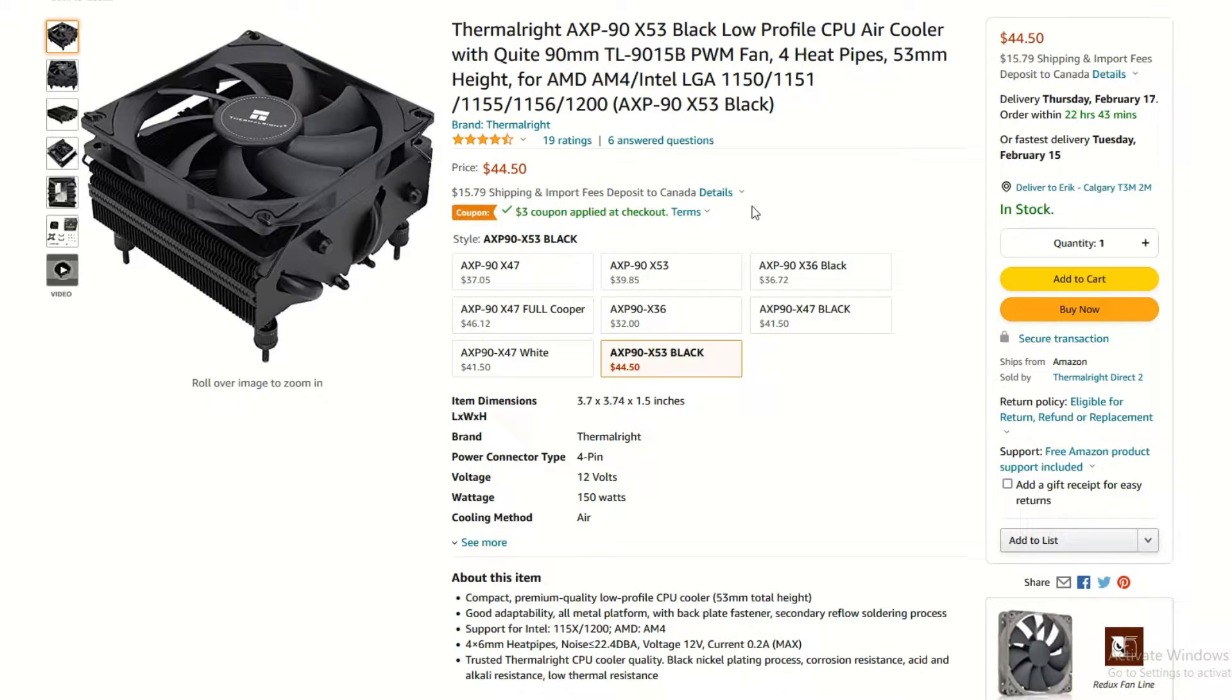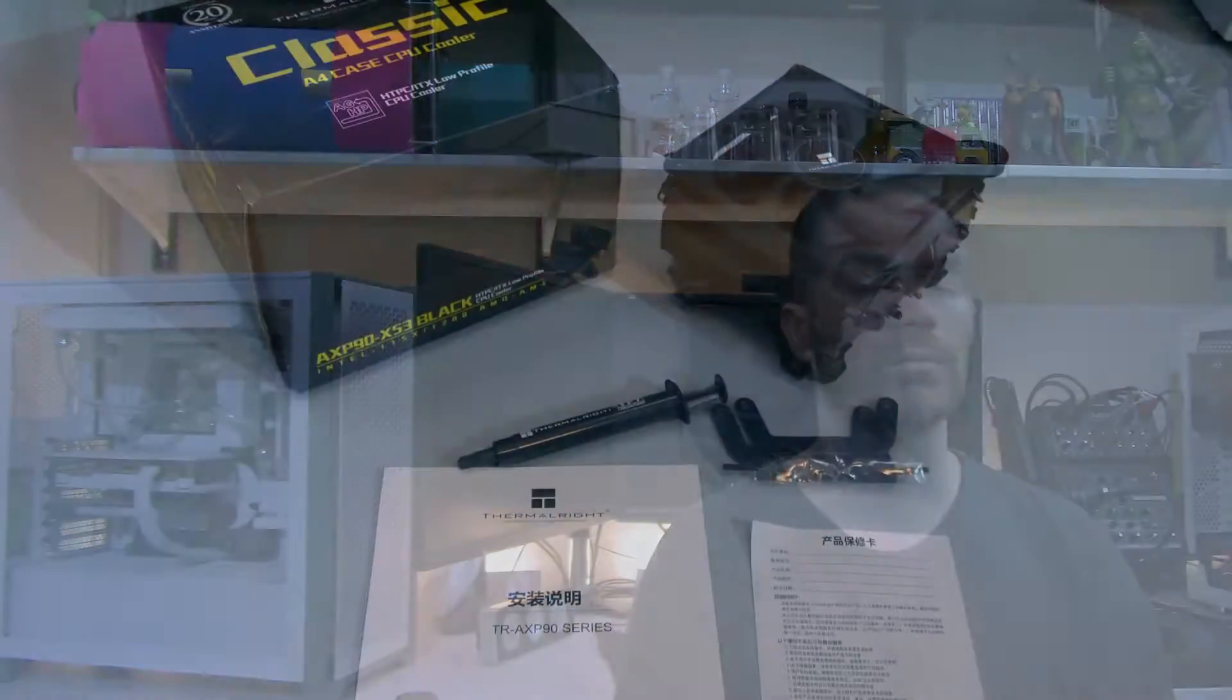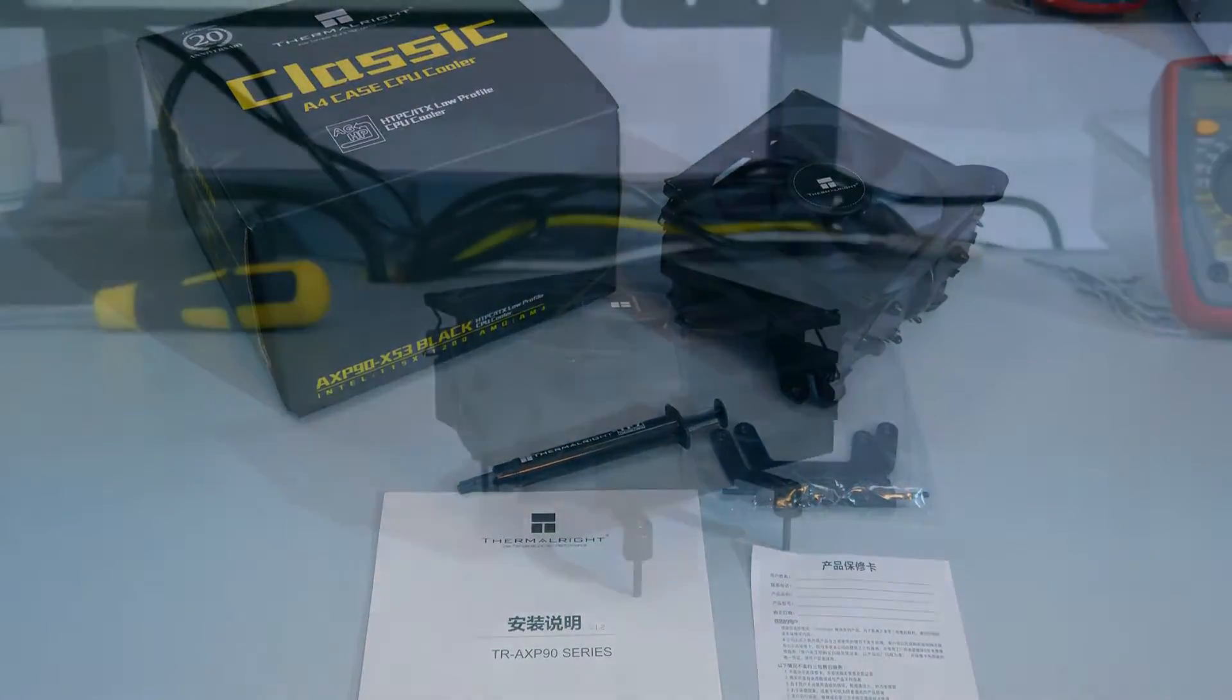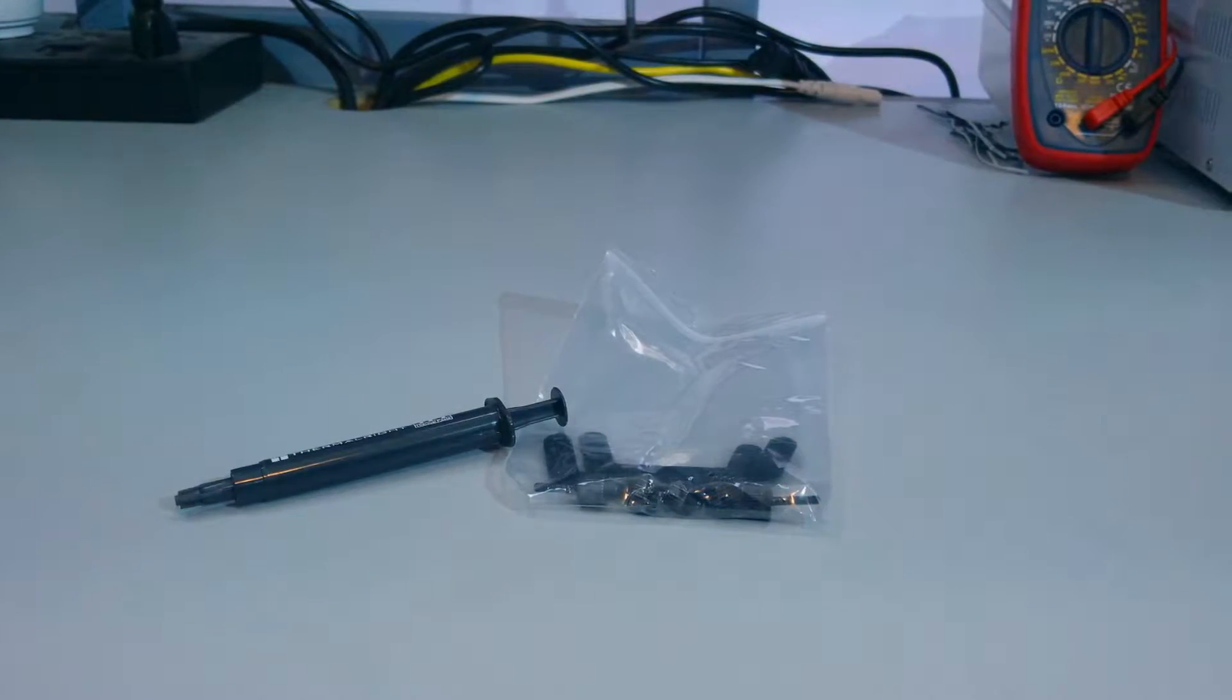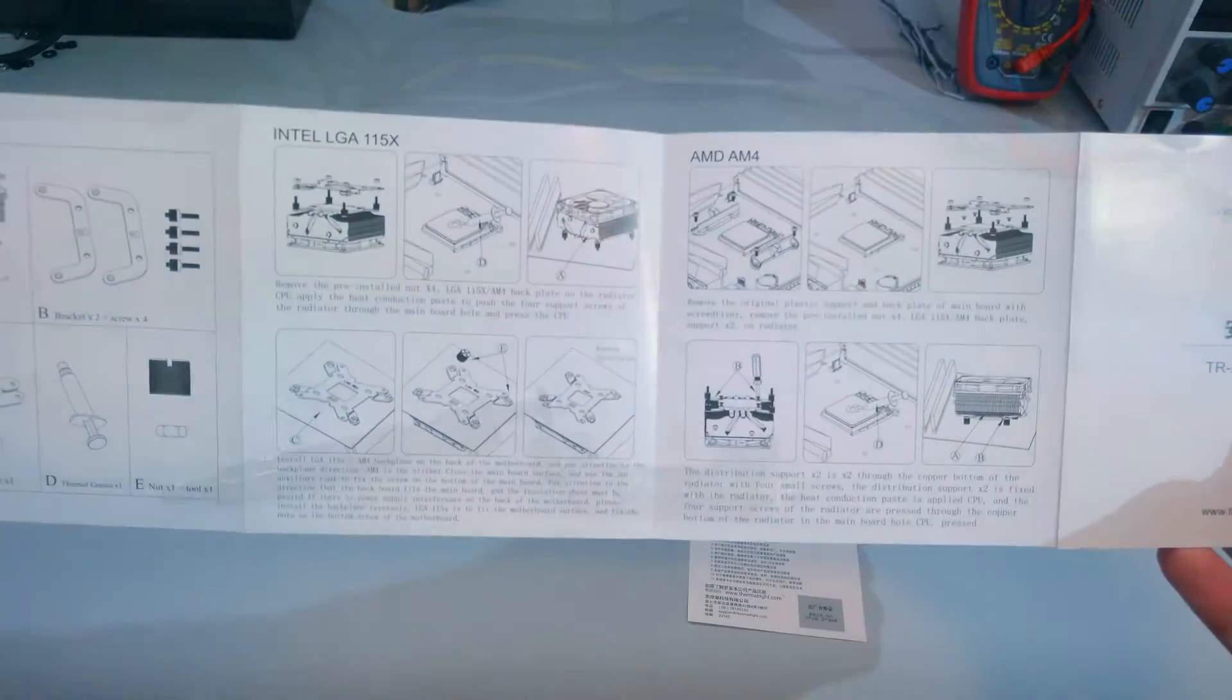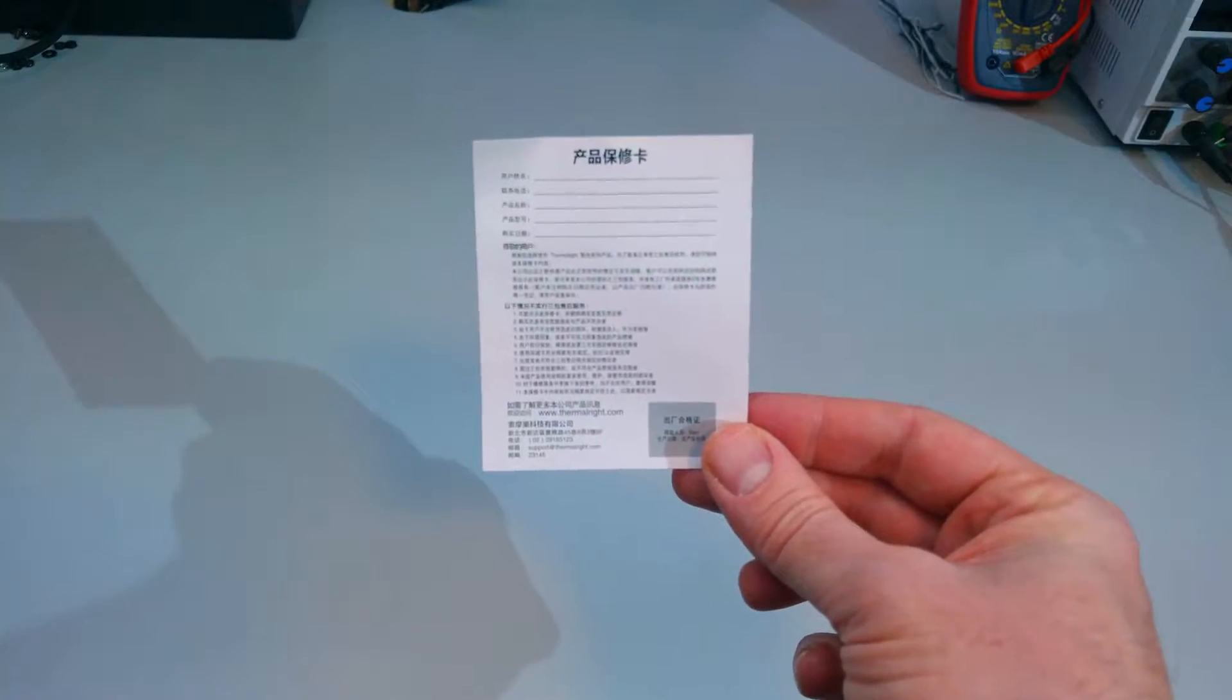These prices are taken from Amazon at time of filming. And as you can see, there is also a coupon. Not sure how long this coupon is valid for. So depending on when you're actually watching this, you might be able to save a few bucks. Okay, let's see what comes in the box. There is the heat sink and fan, the AMD mounting brackets, a tube of thermal compound, the mounting instructions, and what I can only guess is a warranty card. Since I can't read Cantonese or Mandarin, I really have no idea what this is.